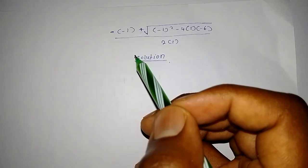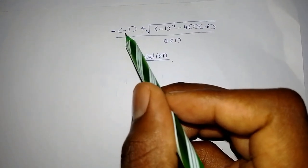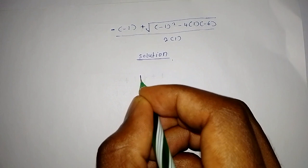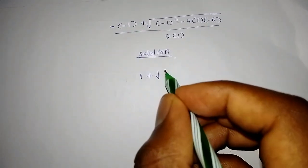Now negative multiply by negative 1 you are going to get positive 1 plus the root of...